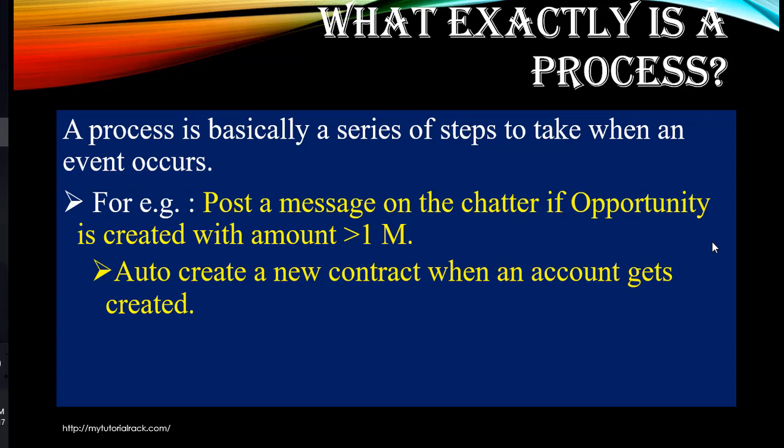A process is basically a series of steps to take when an event occurs. An event can be anything — it can be updating of a field, creating a new record, or deleting of a record. So whenever an event occurs, you define a series of steps to take. That is what a process is.